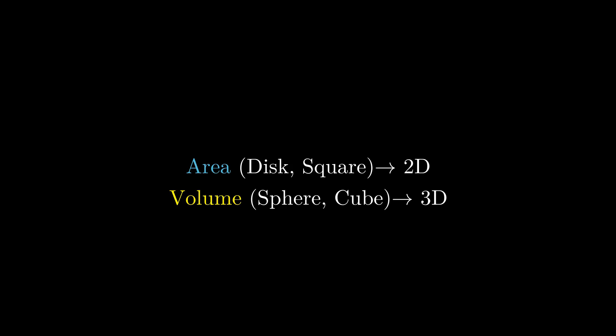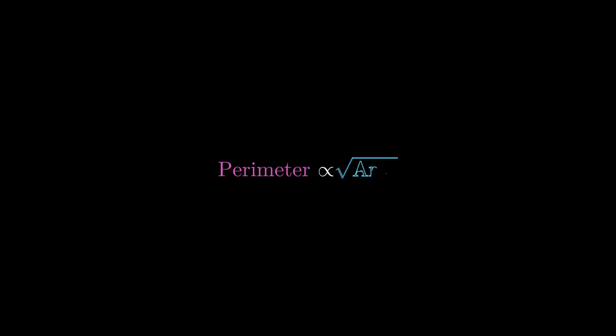One can also work out the relation between the perimeter and the area of these Euclidean shapes: perimeter is proportional to the square root of area. Remember this relation because we'll talk about it a bit more.